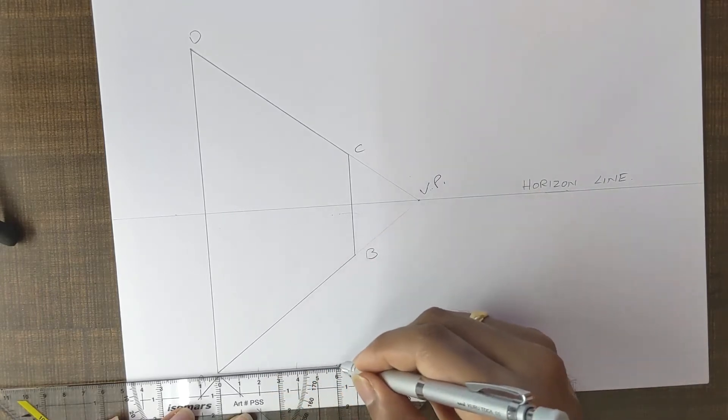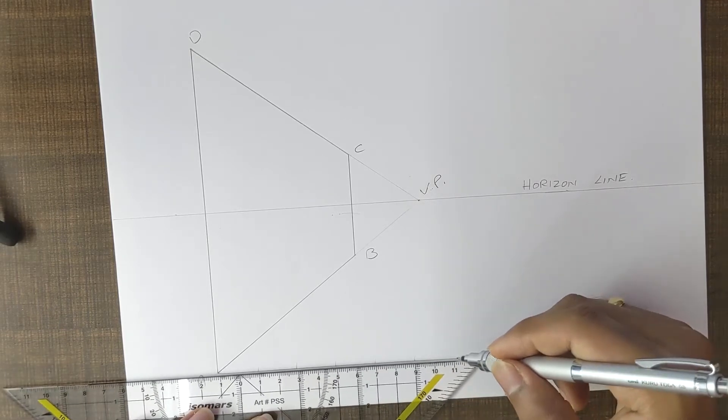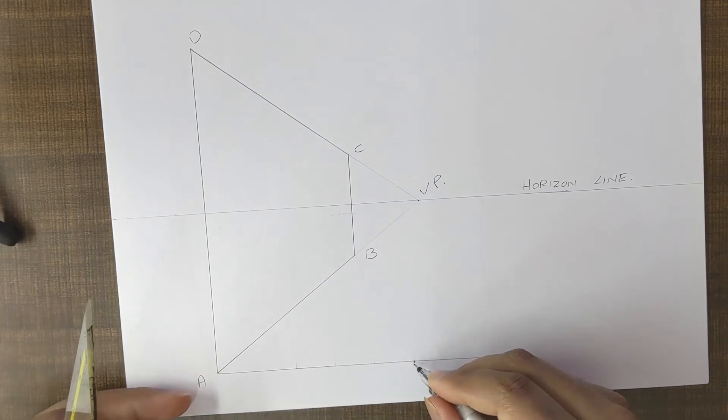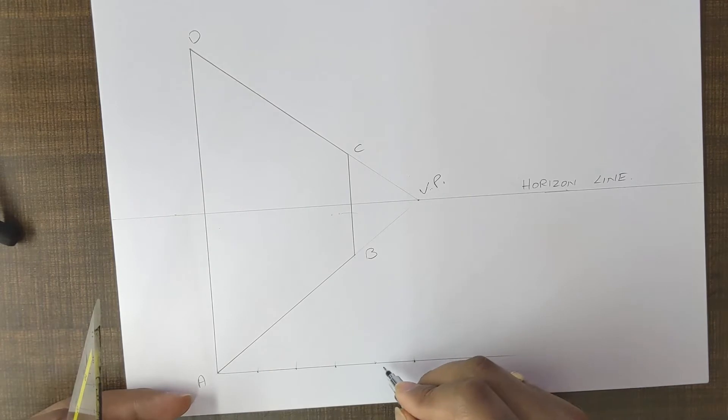So one, two, three, four, five. Yeah, okay, five segments over here. So this is the last point and this is the ending point and we have segment lines over here.